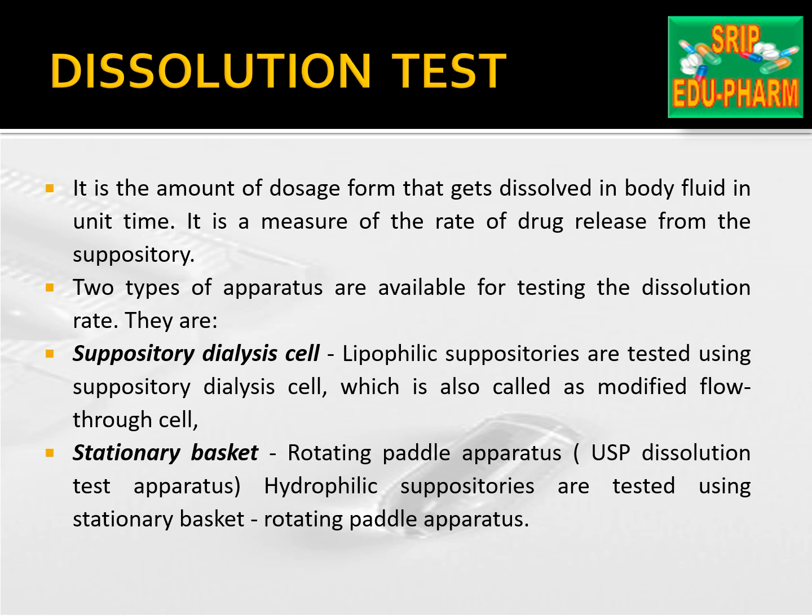7. Dissolution test. It is the amount of drug dose formed that gets dissolved in body fluid per unit time. It is a measure of the rate of drug release from suppositories. Two types of apparatus are available for testing dissolution rates: 1. Suppository dialysis cell — lipophilic suppositories are tested using a disc called a modified flow-through cell. 2. Stationary basket — hydrophilic suppositories are tested using a stationary basket rotating paddle apparatus.